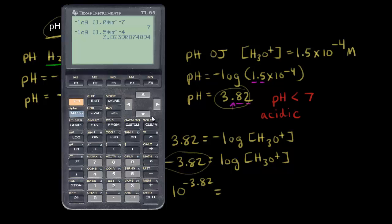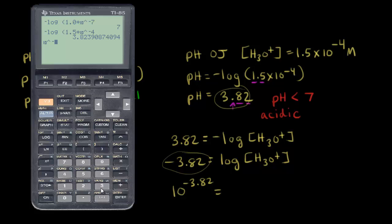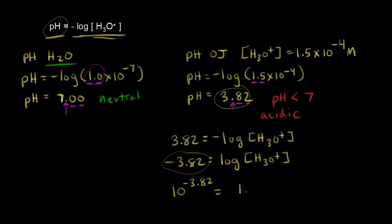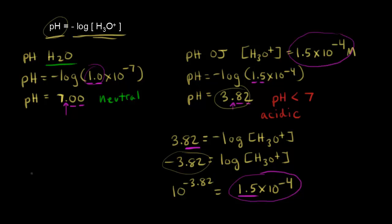Using the calculator, 10 to the negative 3.82 gives us 1.5 times 10 to the negative 4 — rounding to two significant figures. So the concentration of hydronium ions is 1.5 times 10 to the negative 4 molar. This matches our original value, confirming the method. If you're trying to find the concentration of hydronium ions, all you need to do is take 10 to the negative pH.